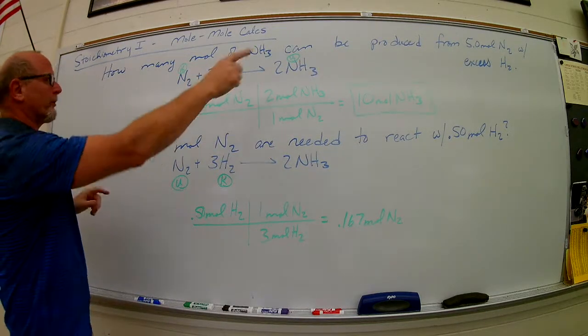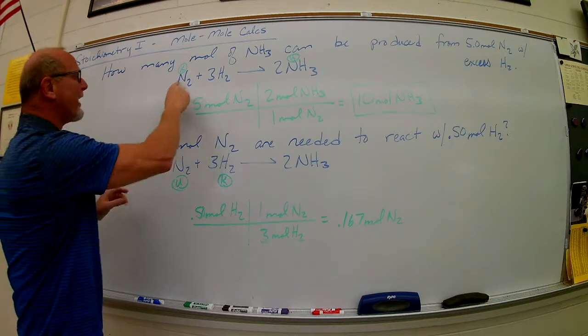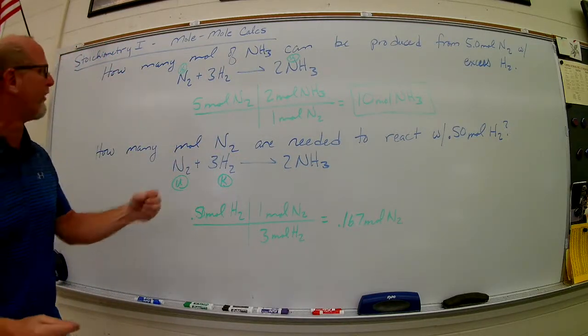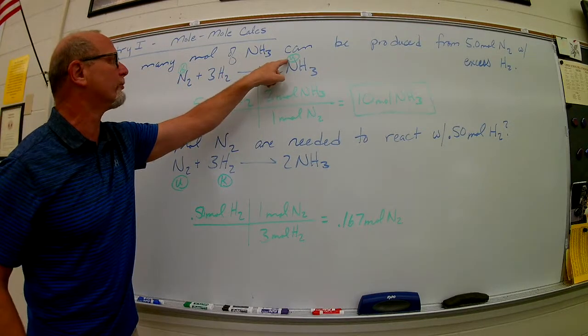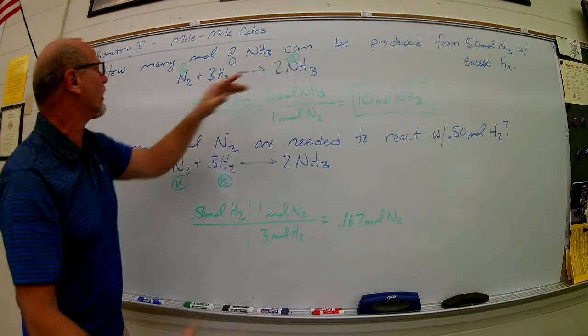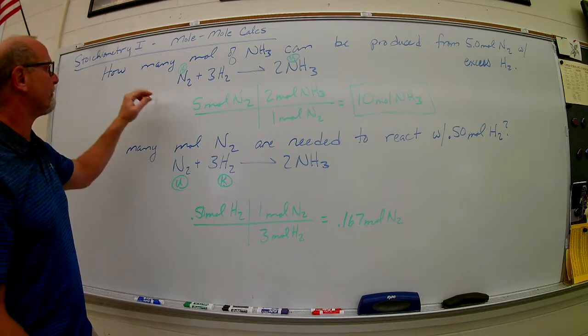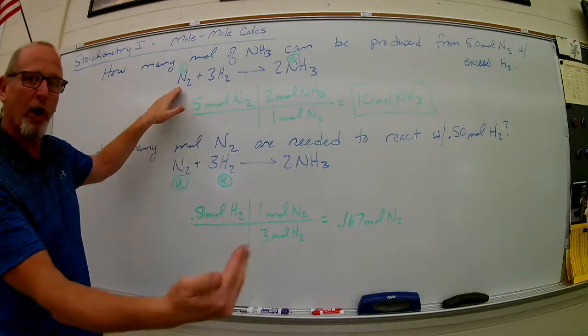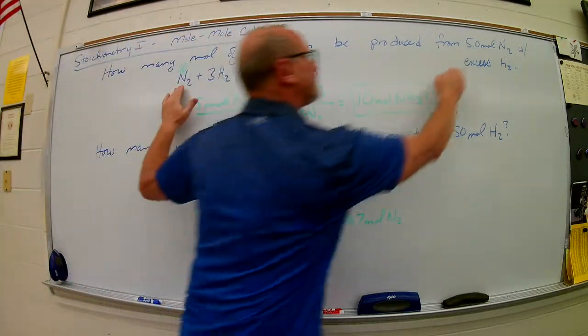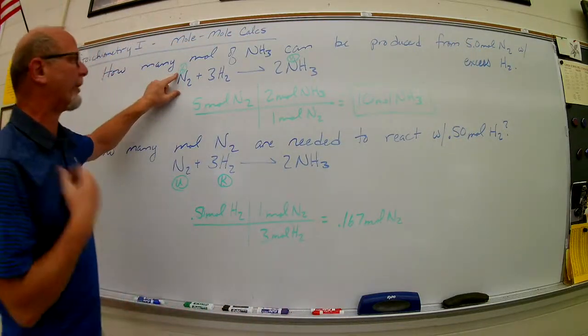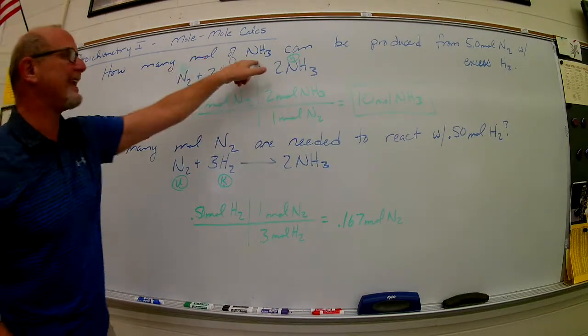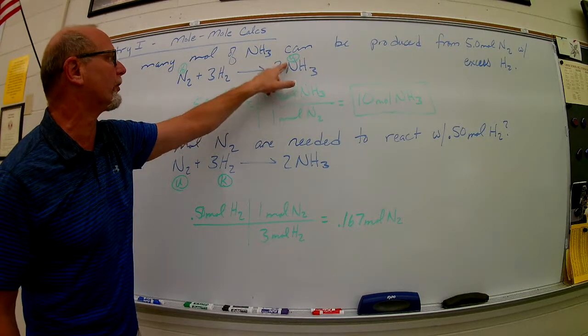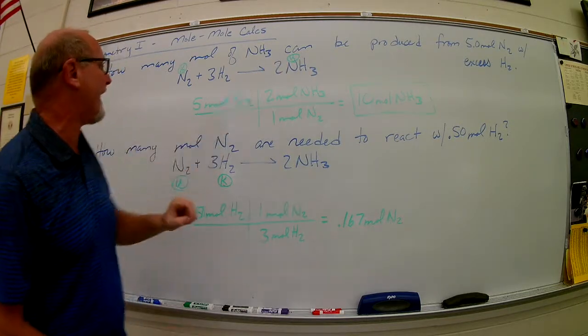I'm going to start with the 5 moles of N2 that are given. Then in my reaction, I'm going to classify what do I know and what is my unknown. What am I looking for? So this one is usually the given or from or how much I have. I have 5 moles of N2, so I put a little K right there up above that. Then it asks, how many NH3s? My NH3s are there. I put an unknown over that.